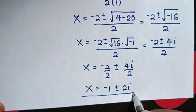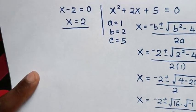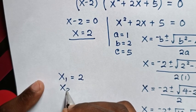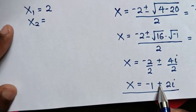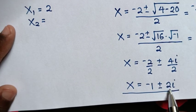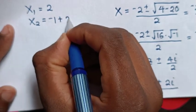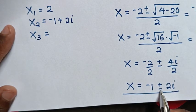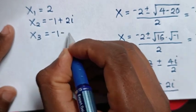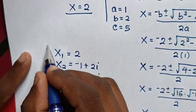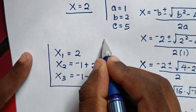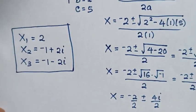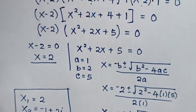So in here we have two solutions for x. Therefore, the first value of x is equal to 2, and the second value of x when positive is negative 1 plus 2i. These are all the values of x in this problem. Thank you for watching, don't forget to subscribe to my channel, and see you in the next video. Bye-bye!